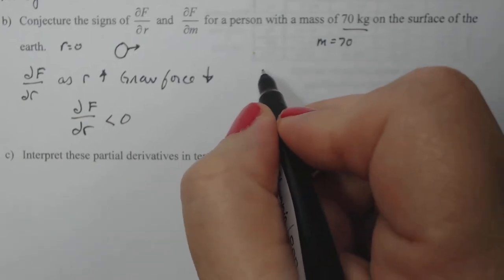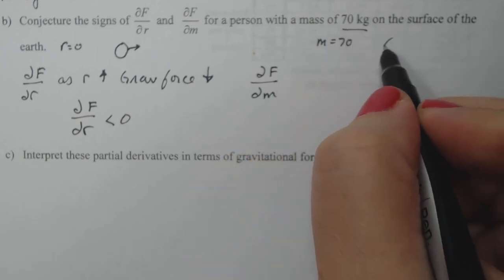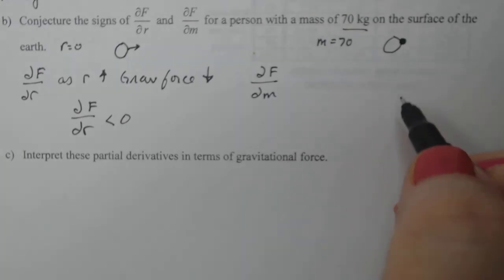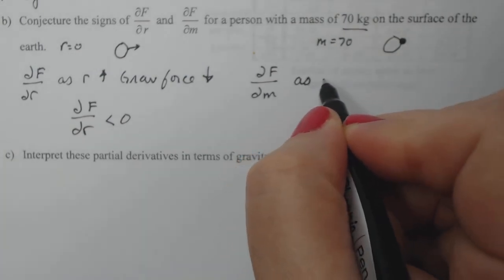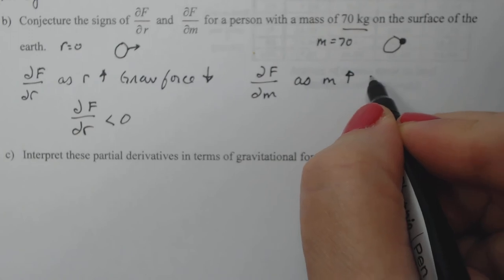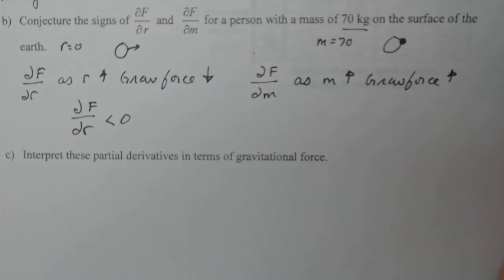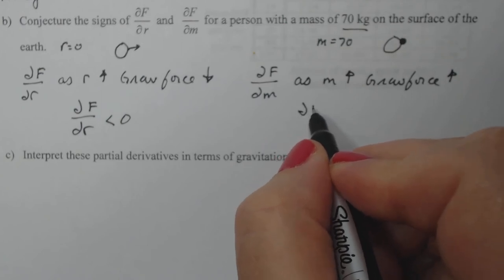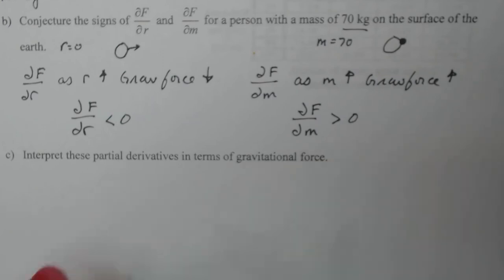For the partial of F with respect to M: staying on the surface of the earth, I increase mass from 70 to 80 to 90 kilograms. As mass increases, the gravitational force actually increases according to physics. So as M increases, gravitational force increases, meaning the partial of F with respect to M is greater than zero.